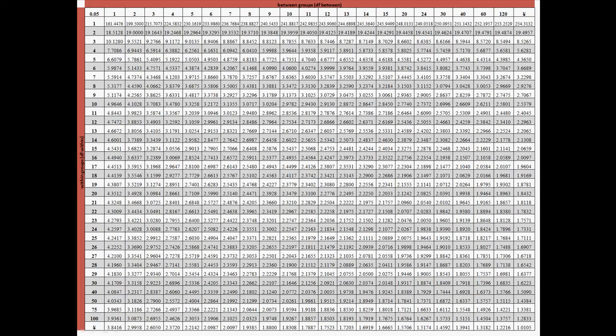But this is the f table. On the top we have the between groups degrees of freedom, and on the left side we have the within groups degrees of freedom. So I'm going to use between is 2 and within is 18. And that's how I'm going to find the critical value of 3.5546.